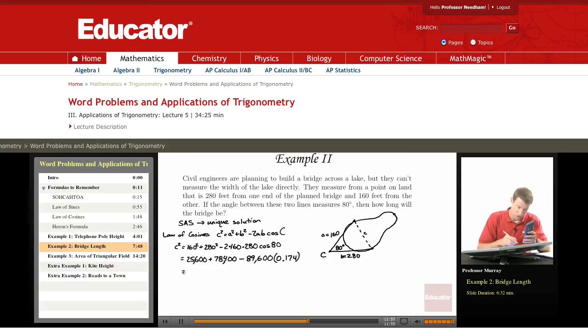And cosine of 80 degrees is 0.174. So let's see, 25,600 plus 78,400 is 104,000. 89,600 times 0.174 is 15,559. And so, that's approximate of course.